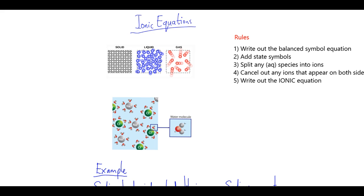Ionic solids are made up of positive and negative ions, and in water they break up into their individual positive or negative ions. An ionic equation shows this.